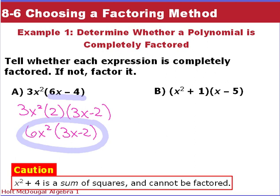For b, we look inside each of our binomials. x²+1 is fully factored, and x-5 is, so here, it is fully factored. So we can't pull any other factors out. It's done.